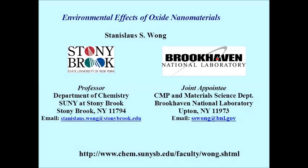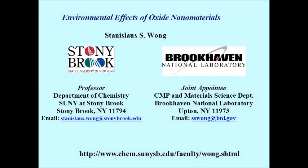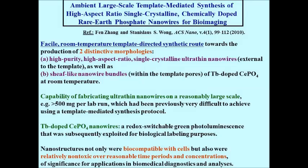I'm going to talk about environmental effects of oxide nanomaterials. To start, our group actually works on synthesizing oxide materials. As an example, we were creating chemically-doped rare-earth phosphate nanowires for bioimaging. We had the ability to make two different morphologies using a room temperature template-directed technique — both high purity, high aspect ratio, single crystalline ultra-thin wires, as well as nanowire bundles.